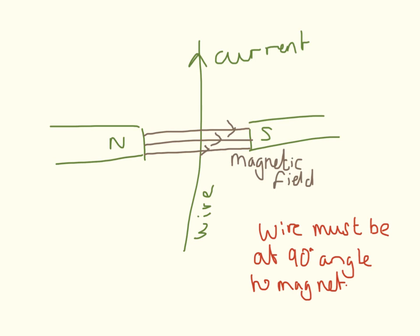If you want to create an electromagnet, the wire must be at 90 degrees to the magnetic field.